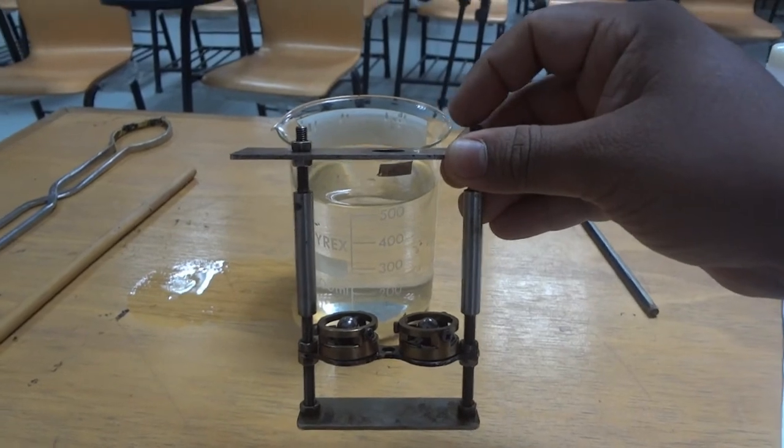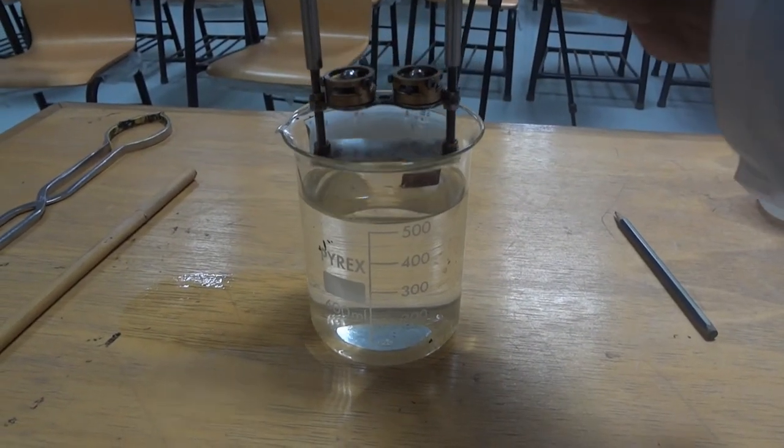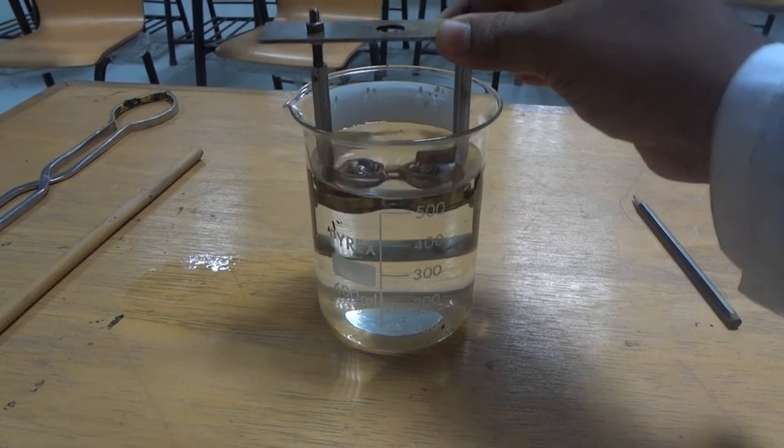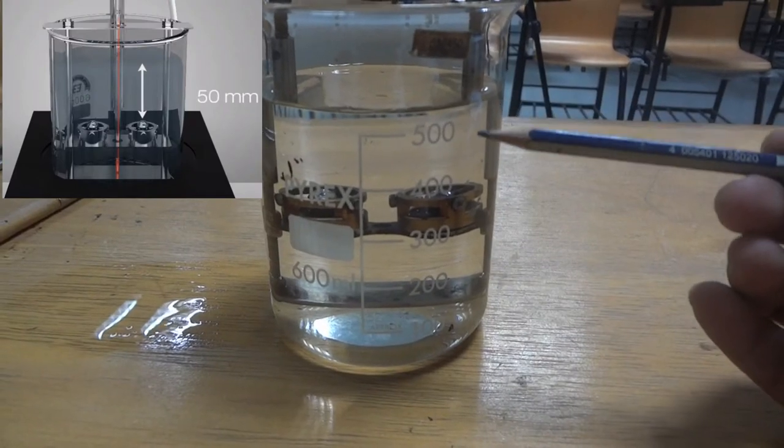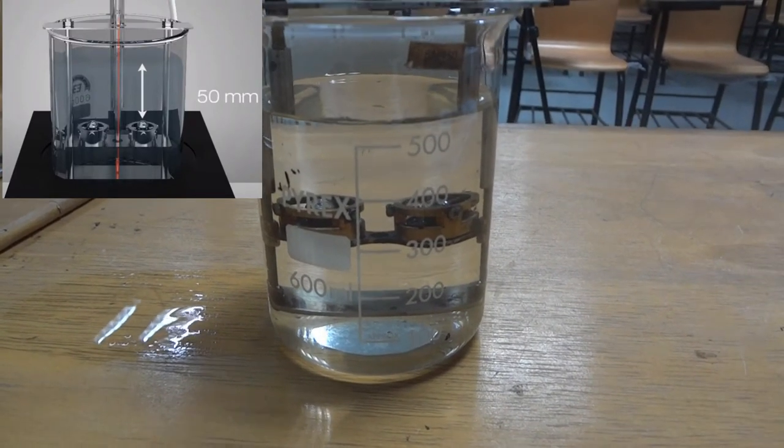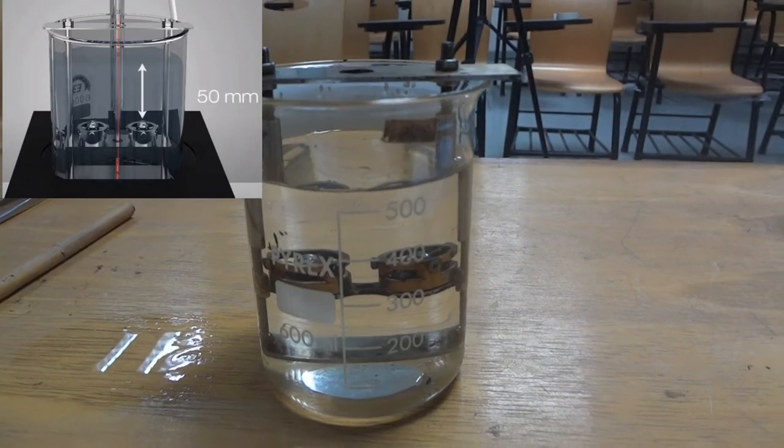Now the support with sample is kept in the glass vessel, which is filled by distilled water. The upper surface of the ring is adjusted at 50 mm below the surface of the water.